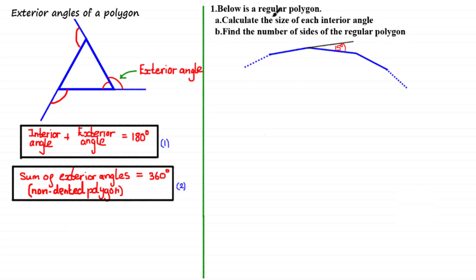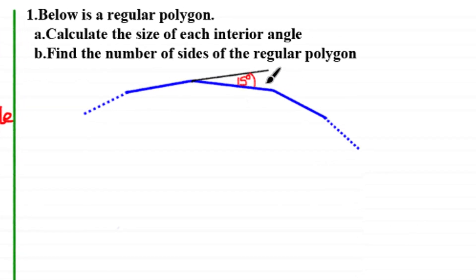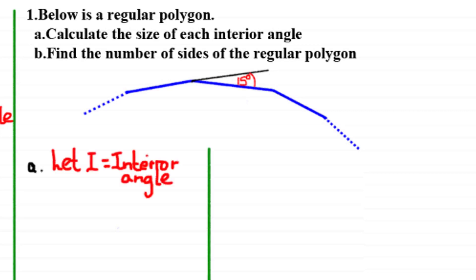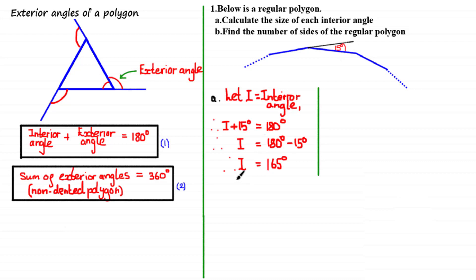We've been told that this is a regular polygon, which means that each interior angle is going to be equal, so we just need to find the size of one interior angle. We've been given that the exterior angle is equal to 15 degrees. If we let I be the interior angle, then by using equation 1, I plus 15 degrees equals 180 degrees, as the angles on a straight line sum to 180 degrees. Rearranging for I, we get that the size of each interior angle is equal to 165 degrees.